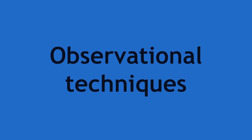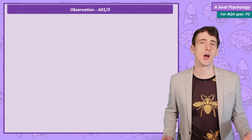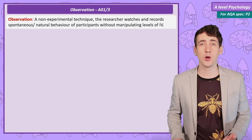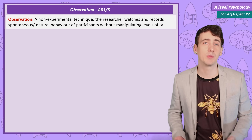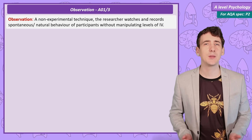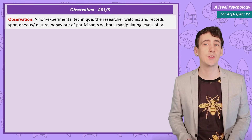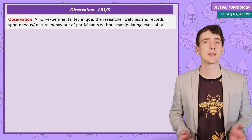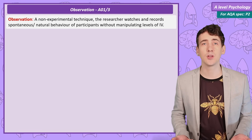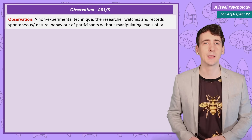Observational Techniques. We should probably start by defining an observation. This is researchers watching and recording behaviour as it happens. As simple as this sounds, the researcher has choices to make about the type of observation they want to conduct, and this might depend on the research question they are investigating.